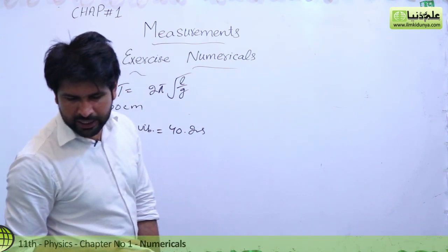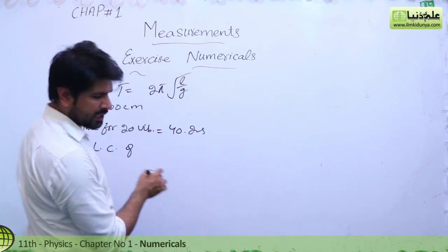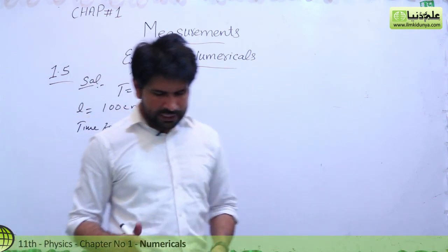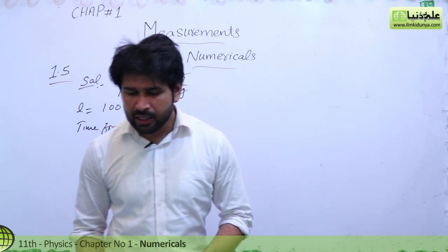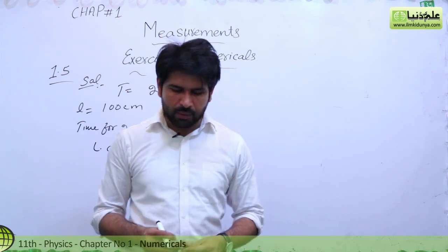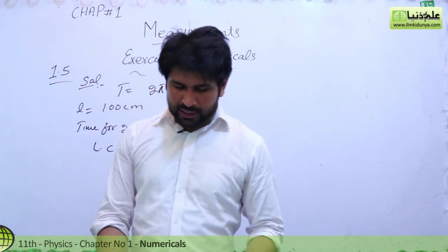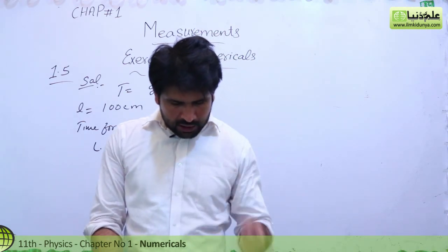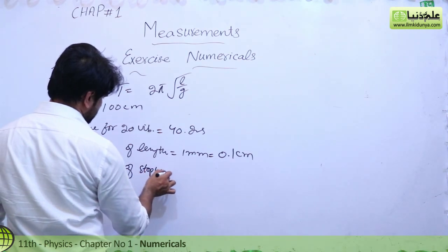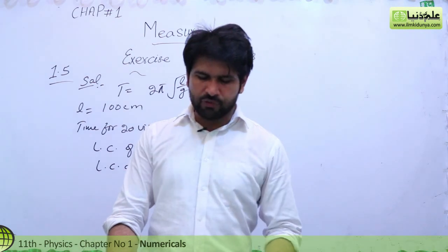Time for 20 vibrations is given. The least count of length - the least count of the scale used to measure length - is given as 1 millimeter, which we can write as 0.1 centimeter, because 1 centimeter contains 10 millimeters. The least count of the stopwatch is given as 0.1 seconds. This is all the information we have.